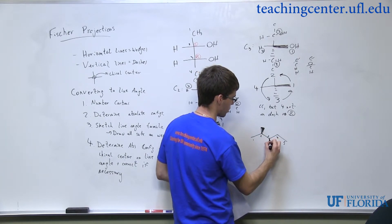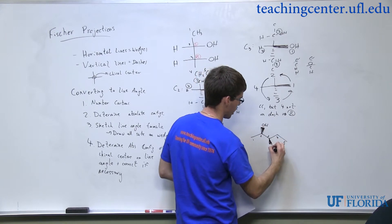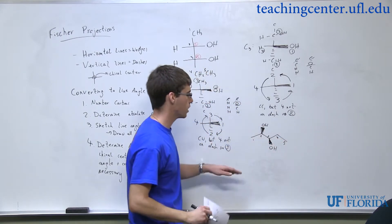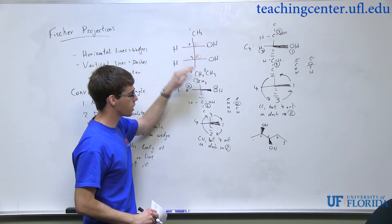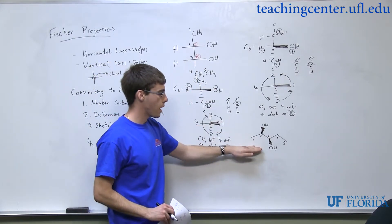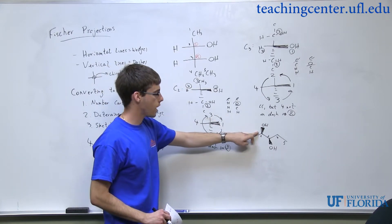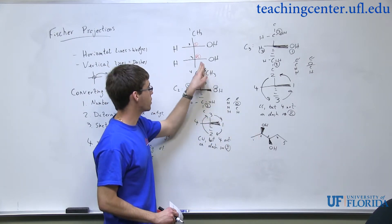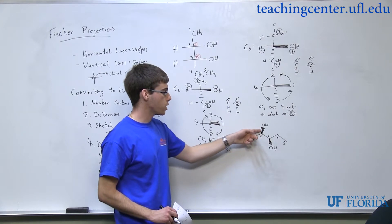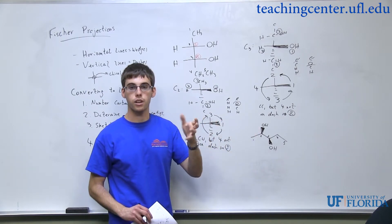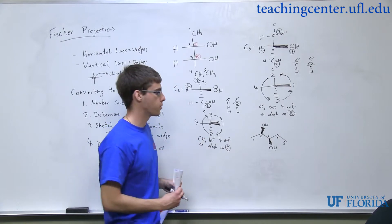Again, this is just a guess. We've got to do the absolute configuration again to see if this is correct, because we need the stereochemistry on the Fischer projection to match up with the stereochemistry on the line-angle. So center two must be S and center three must be R. If not, all we have to do is change this from a wedge to a dash, because inverting that group will cause a reversal of absolute configuration.